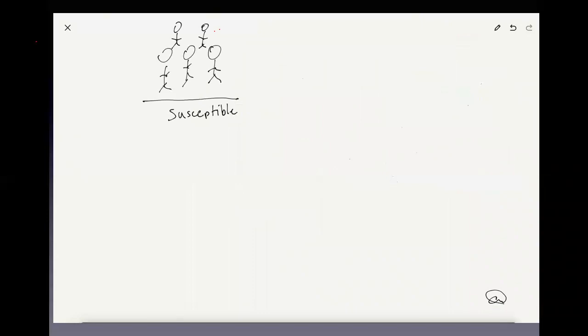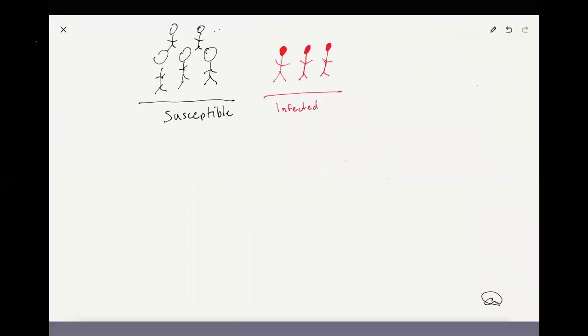All right, so here again is a simple illustration. You have a group of the population that's susceptible, and then a part of them becomes infected.